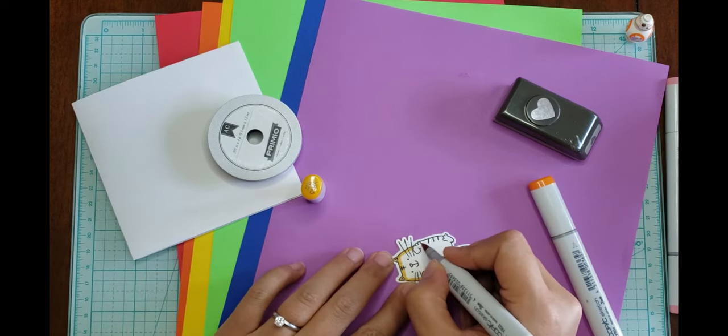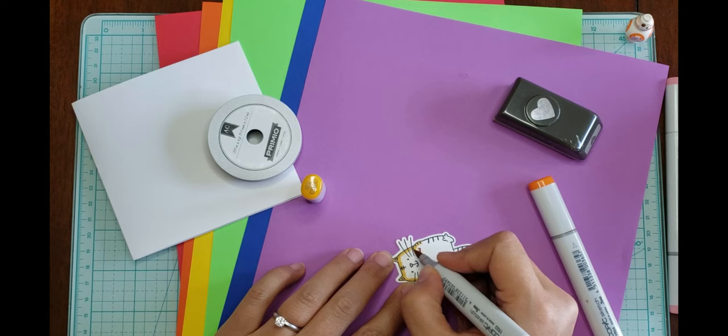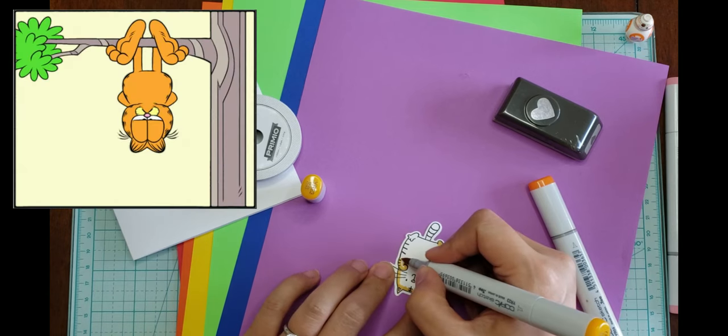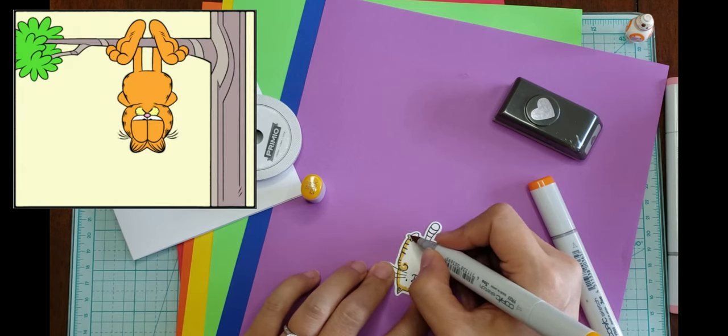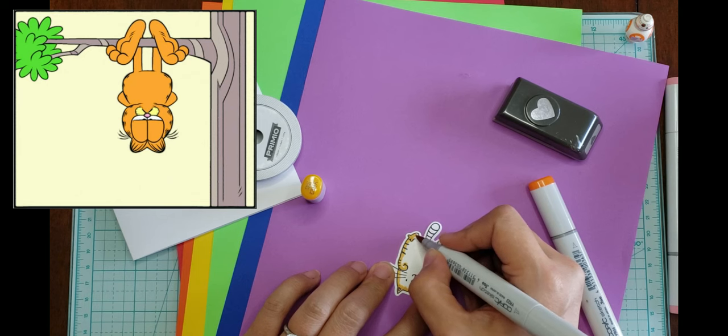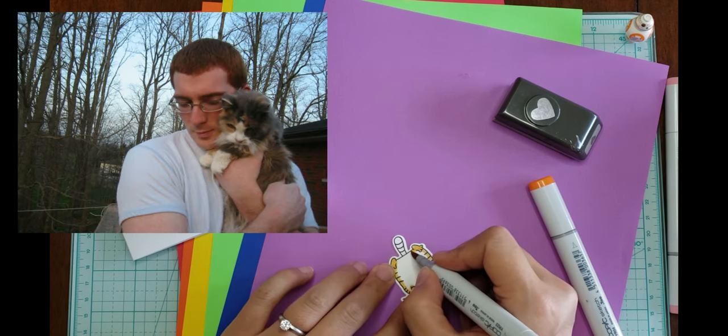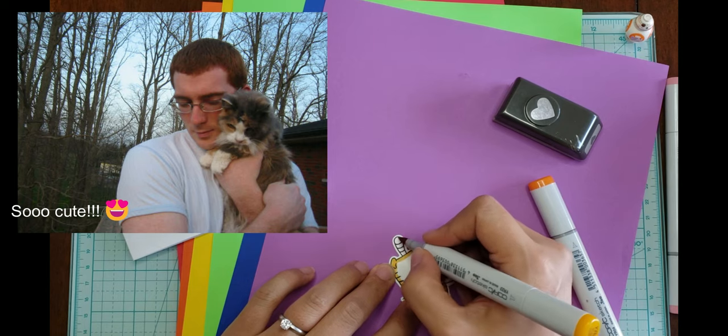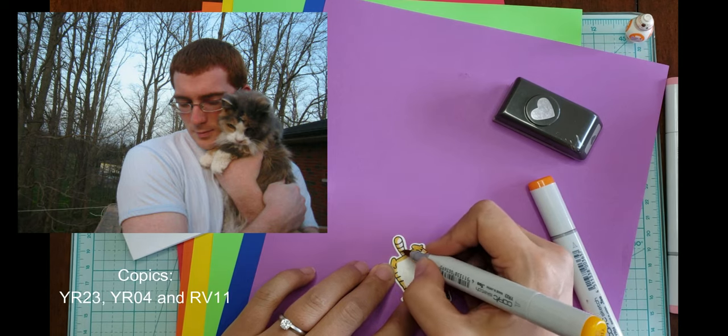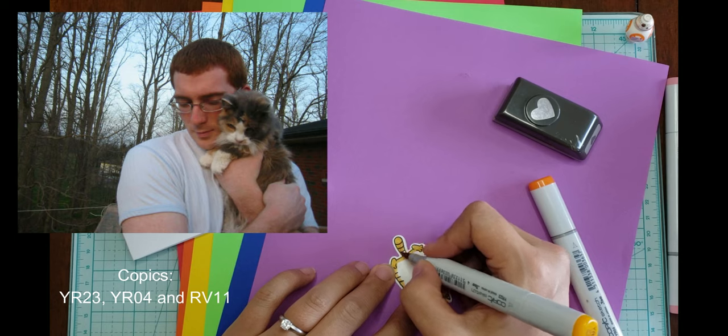I colored the cat more like an orange tabby. I must have been thinking of Garfield. This is what she should have looked like. I used the Copic markers YR23, YR04, and RV11 for the nose and cheeks.